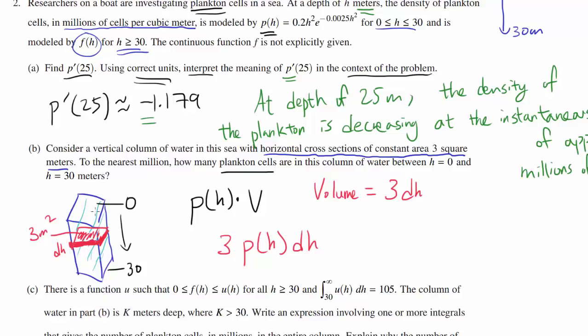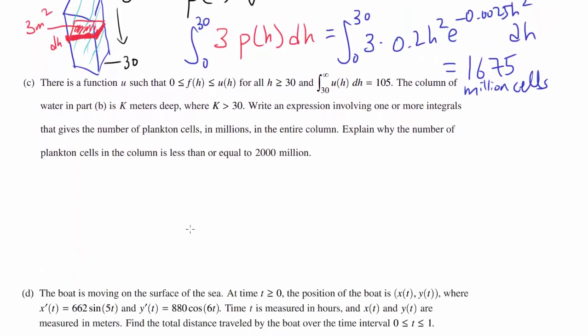And of course, you're going to integrate this from 0 to 30, because you're adding up infinitely many of these boxes. So we are going to integrate from 0 to 30, 3 times P(H) = 3·0.2H²e^(-0.0025H²) dH, and plug it into your calculator, and you should get 1675 million cells of plankton.